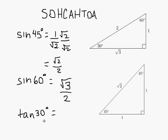Now the tangent of 30 degrees. We will be using this triangle because 30 degrees is right here. Tangent is opposite over adjacent.